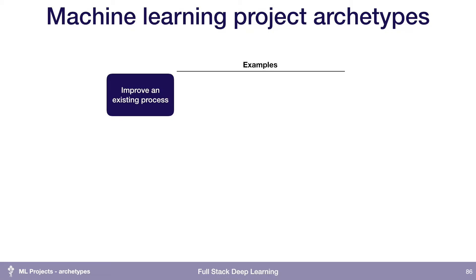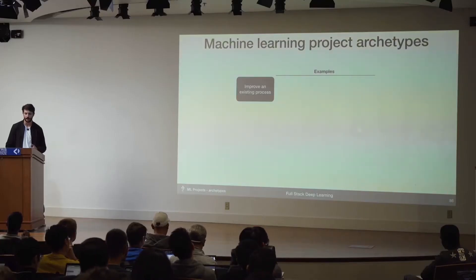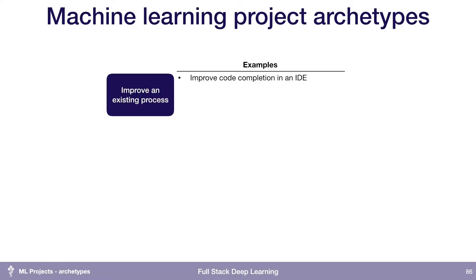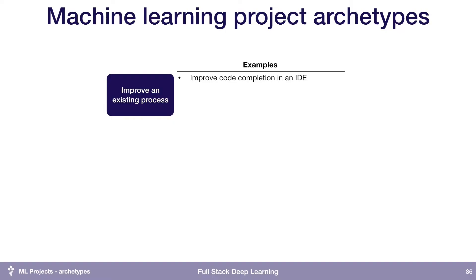The main archetypes I think of are: one, improving an existing process. A couple of examples would be, let's say we already have an IDE and we're doing some code completion, but we want to use machine learning to do better code completion. So we have a working system, we have an existing process, and we're trying to make it better.